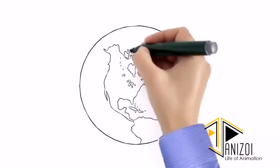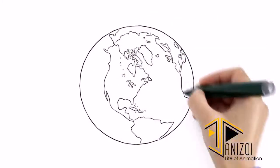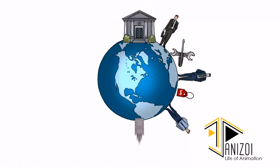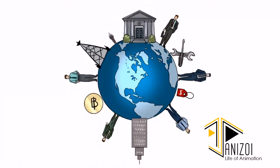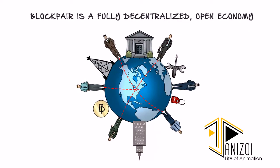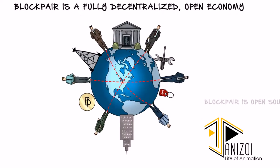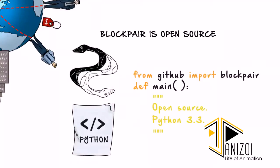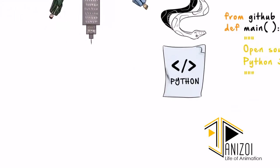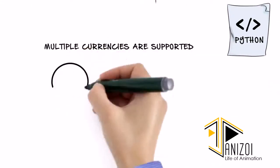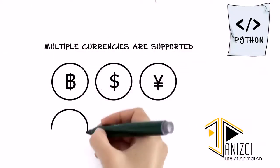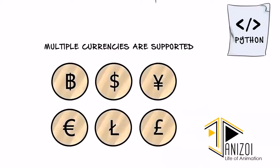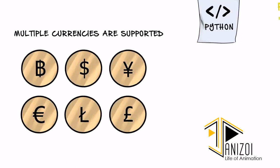BlockPair is a fully decentralized open economy. It allows anyone to trade money and goods directly with other people by using simple software. The software is open source and free to use. It supports multiple currencies, including Bitcoin, Litecoin, other cryptocurrencies, and regular money.